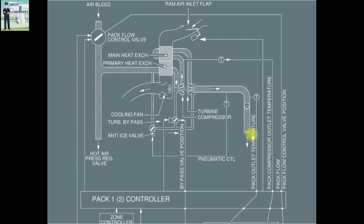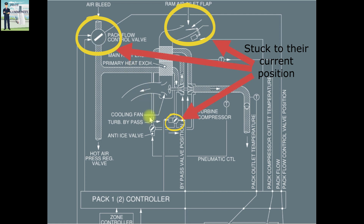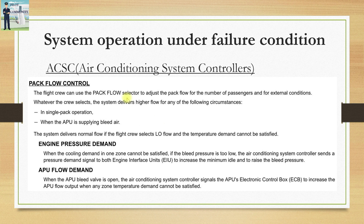With both pack controller channels failed, the pack flow control valve, ram air inlet flap, and turbine bypass valve will all be non-functional, stuck in their positions at the time of failure. Temperature regulation will then be provided by the anti-ice valve, which mixes hot air with the cold air. Now let us look at the ACSC — Air Conditioning System Controllers — which is present in newer aircraft models.